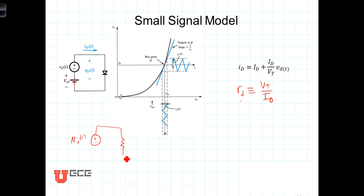And in this small signal model, when we're looking only at the small excursions of the AC voltage, we can replace the diode with its small signal resistance.